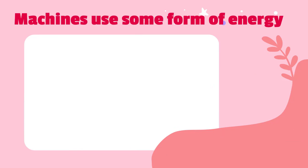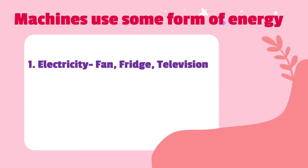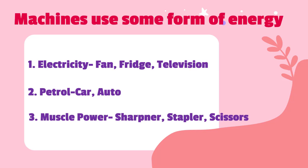Machines use some form of energy. Electric energy is used by machines such as fan, fridge, and television set. Petrol is used in cars and autos. Muscle power is used by sharpener, stapler, and scissors.